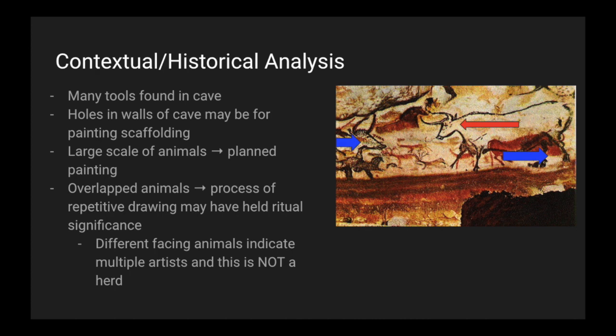For some contextual historical analysis, there are many tools found in the cave and holes in the walls that may have been for scaffolding while they were painting. The large scale of the animals could indicate that this was a planned project, and the overlapped animals could indicate that the process of repetitive drawing may have held ritual significance. The different facing animals indicate multiple artists and the fact that this is not a herd.